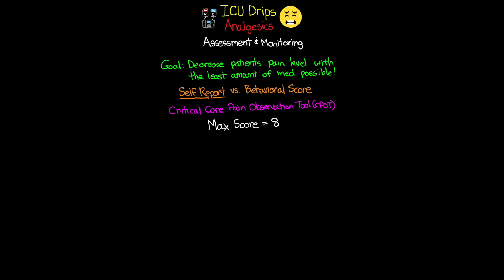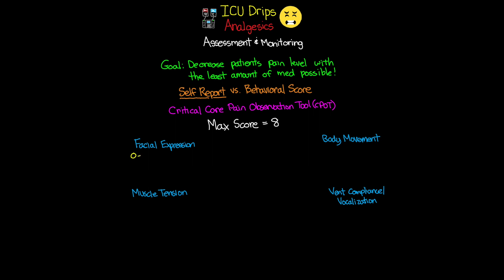Facial expression is probably one of the best indicators we have to determine if our patients are having pain. A score of 0 is when they're relaxed and neutral — we're not going to observe any muscle tension. A score of 1 is what we call tense, where we see frowning, lowering of the brows, and tightening of the eyes.